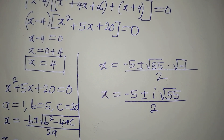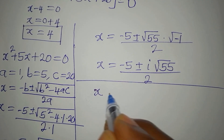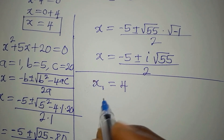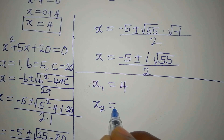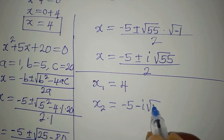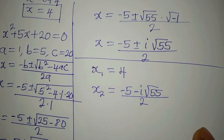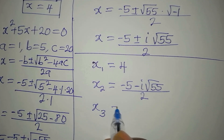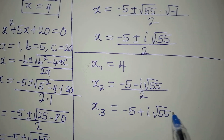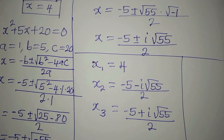This is a 2-in-1 solution. Bringing all three solutions together: x₁ equals 4; x₂ equals minus 5 minus i root 55, divided by 2; and x₃ equals minus 5 plus i root 55, divided by 2. These are the three solutions.